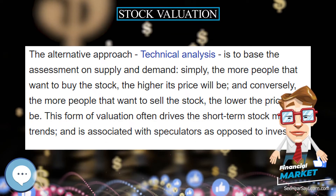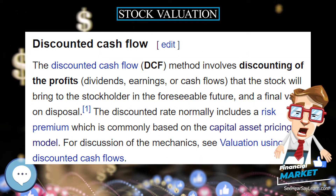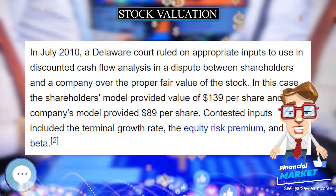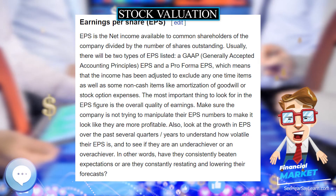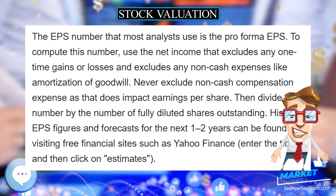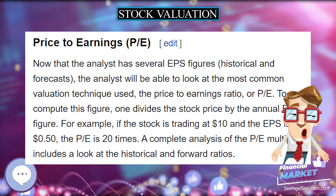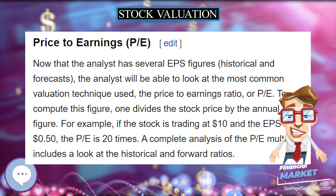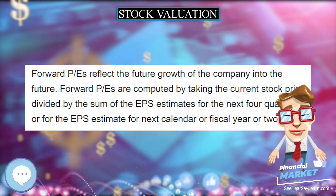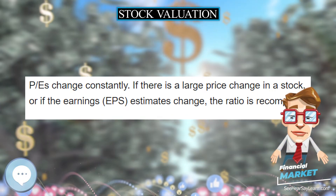EPS is the net income available to common shareholders of the company divided by the number of shares outstanding. Usually there will be two types of EPS listed: a GAAP (generally accepted accounting principles) EPS and a pro forma EPS, which means that the income has been adjusted to exclude any one-time items as well as some non-cash items like amortization of goodwill or stock option expenses. The most important thing to look for in the EPS figure is the overall quality of earnings. Make sure the company is not trying to manipulate their EPS numbers to make it look like they are more profitable. Also, look at the growth in EPS over the past several quarters and years to understand how volatile their EPS is, and to see if they are an underachiever or an overachiever.